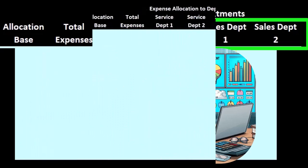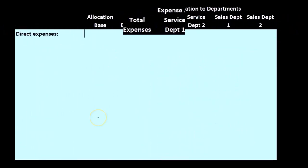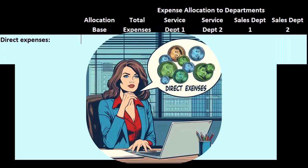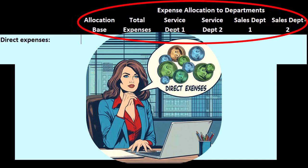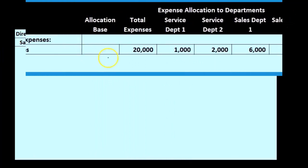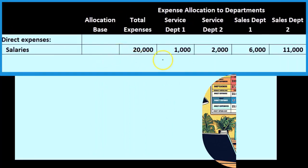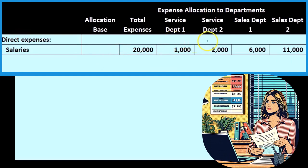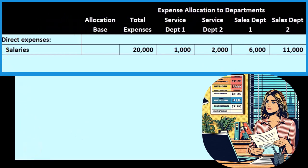After we determine what the service department costs will be, we will ultimately apply them out to sales departments one and two. Revenue should be fairly straightforward — we can allocate it by department on our income statement because we know which departments made those sales. Then we have expenses, which have two components. The direct expenses are the ones that are easily allocated: here are the total direct expenses broken out by service department one, service department two, and operating departments one and two.